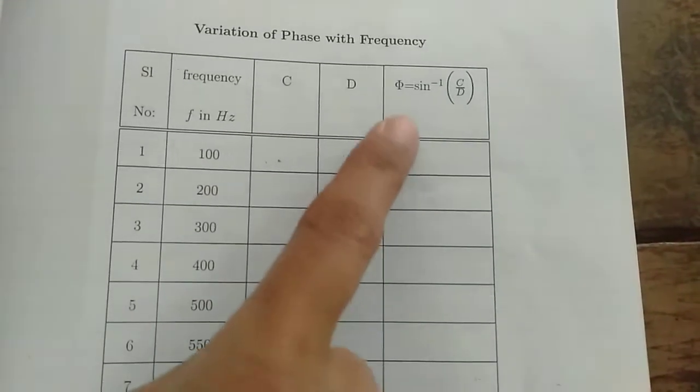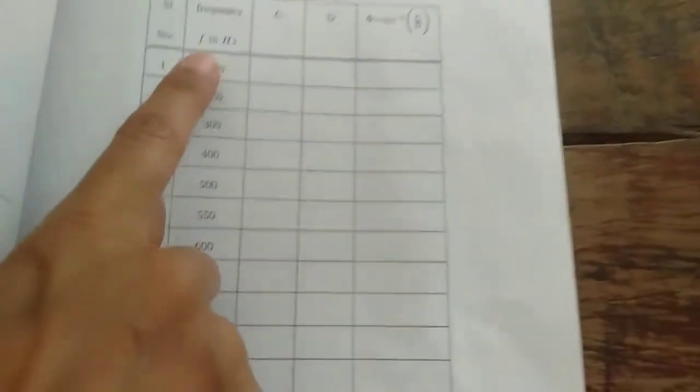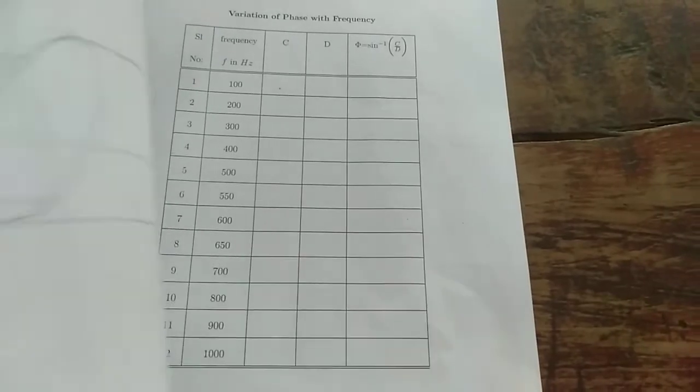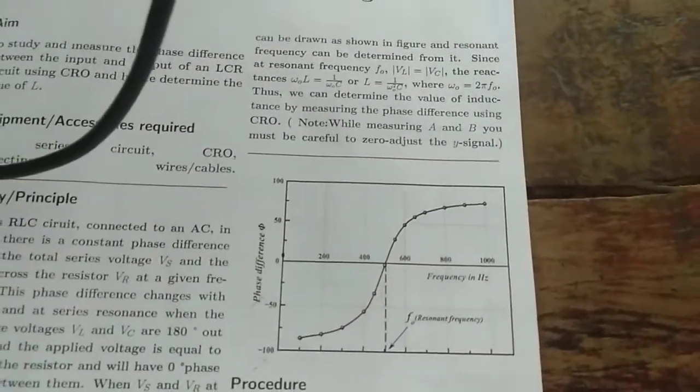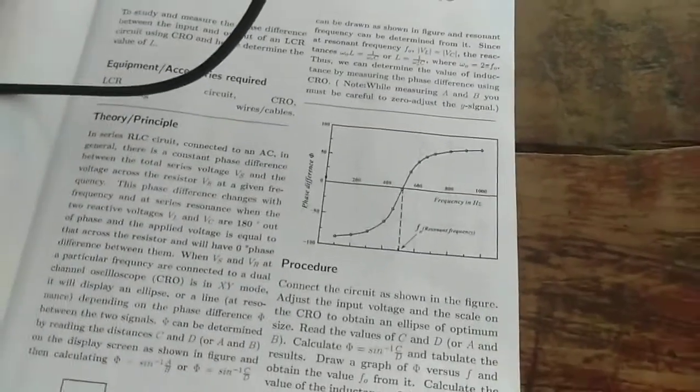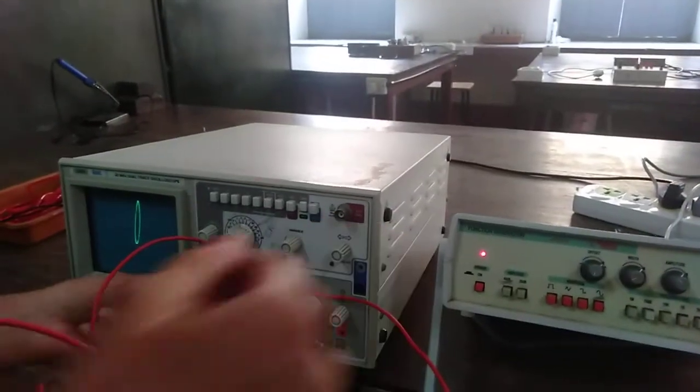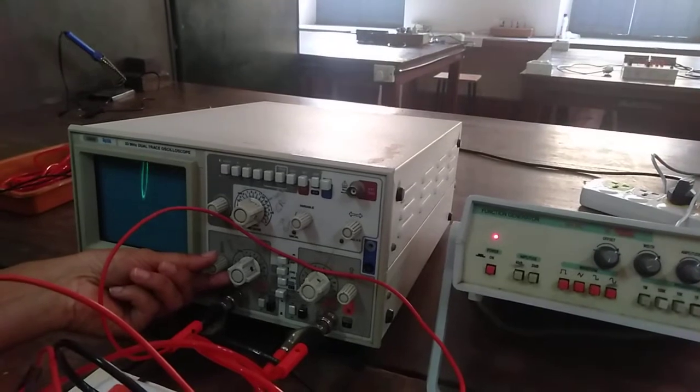And once you get the phase difference for various values of frequency starting from 100 to 1000 hertz, you can plot the graph. Before plotting the graph, let me just show you on the screen. Just go through this ellipse. You just keep it exactly at the center.